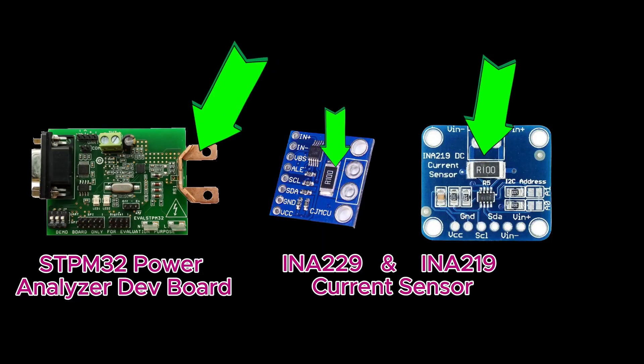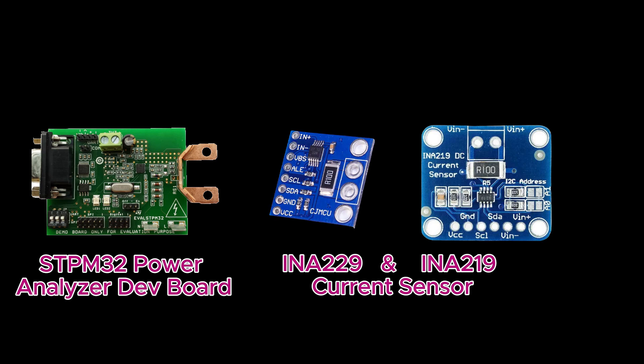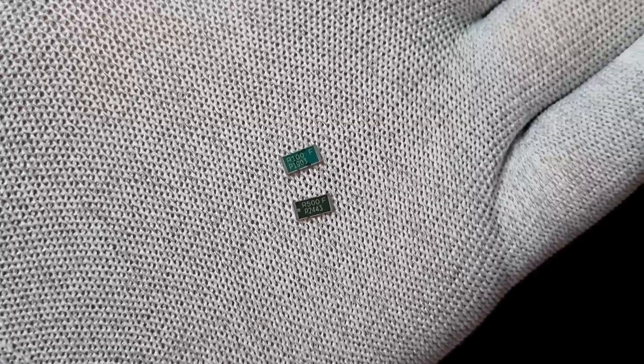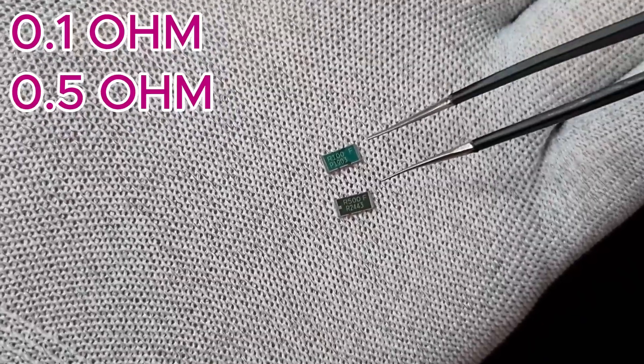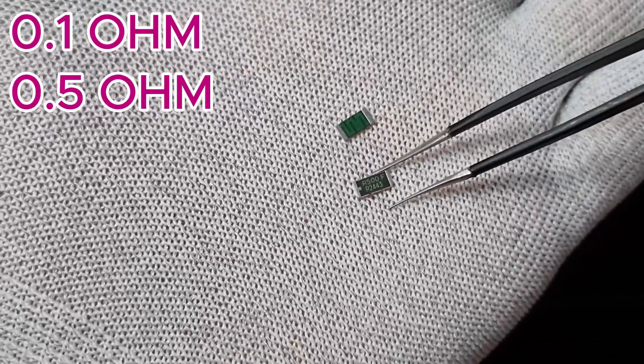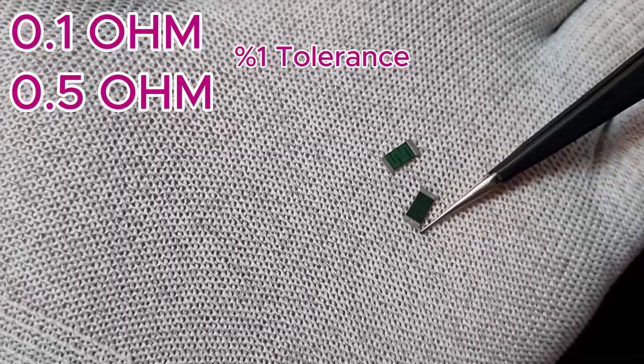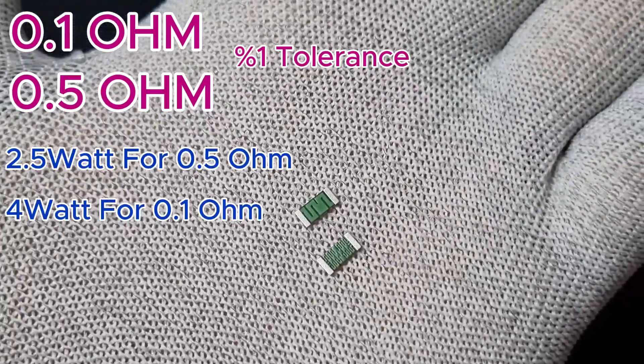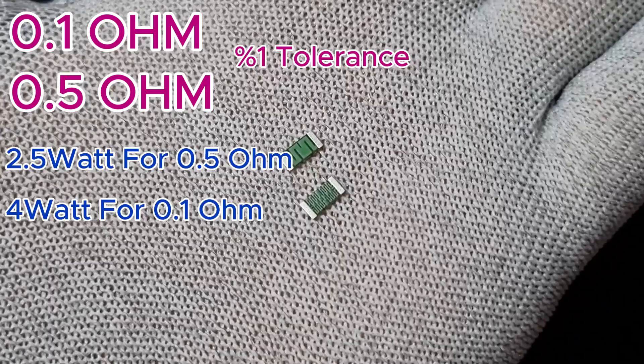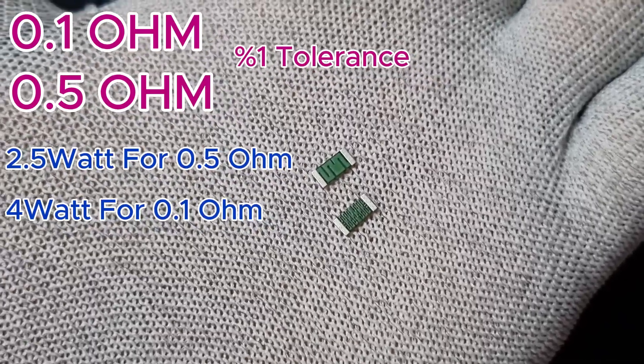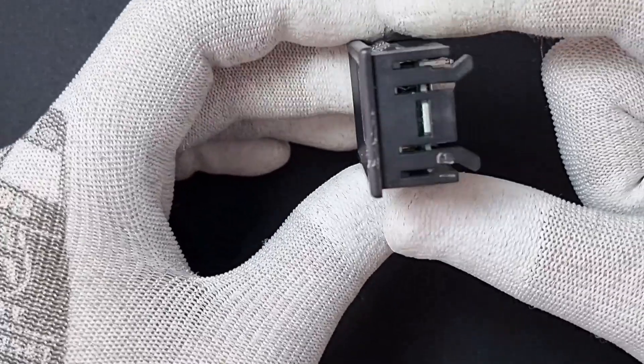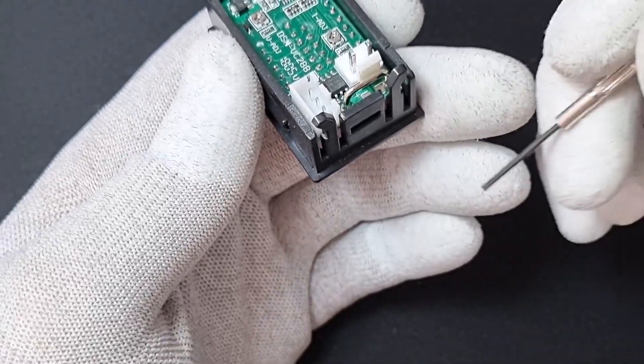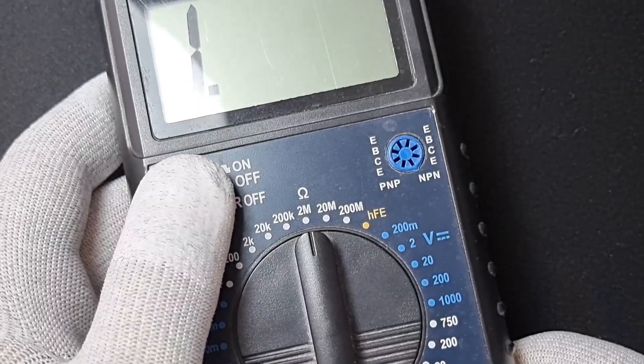Now let's discuss shunt resistors, commonly used in current sensing circuits. These resistors usually have a very low resistance to minimize power loss. For example, I have a 0.5 ohm and 0.1 ohm shunt resistor, both with 1% tolerance and high power ratings. We measure the voltage across the resistor, and since we know the resistor's value, we can calculate the current using Ohm's law. These are some of the shunt resistors I found in multimeters, and they are in through-hole packages.